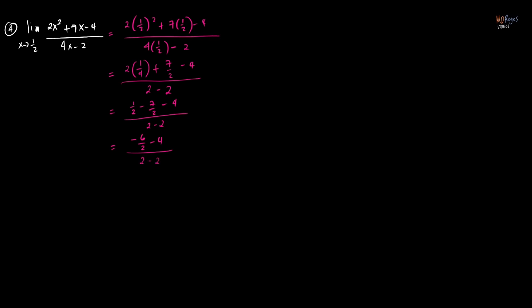Correcting the calculation: 1/2 plus 7/2 is 8/2, which is 4. So 4 minus 4 is 0 in the numerator, and 2 minus 2 is 0 in the denominator. We again have zero over zero — the indeterminate form — which means we have to do something with the function.